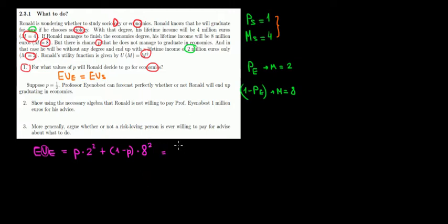Now what would be the expected utility from sociology? We know that the probability from sociology is 1 times the income from sociology, which is 4, and the utility from 4 is just 4 squared. So that would be 16.